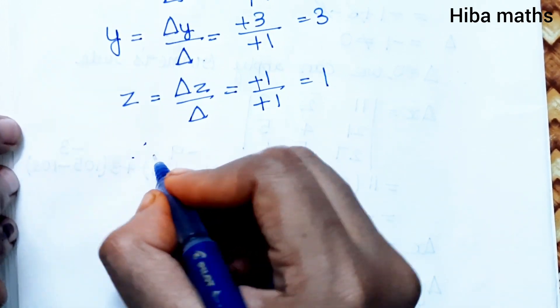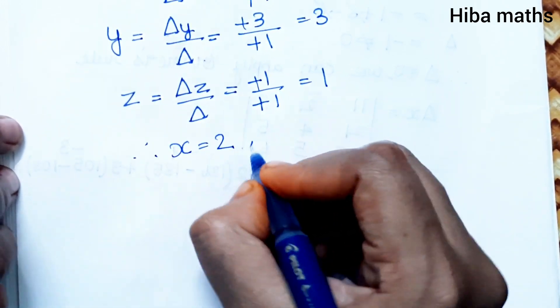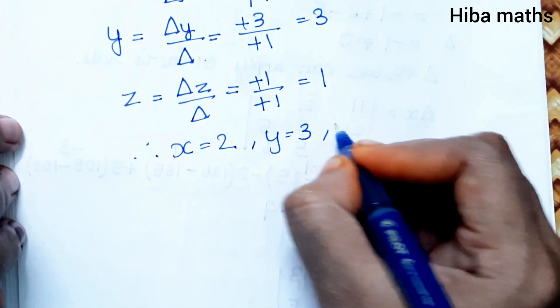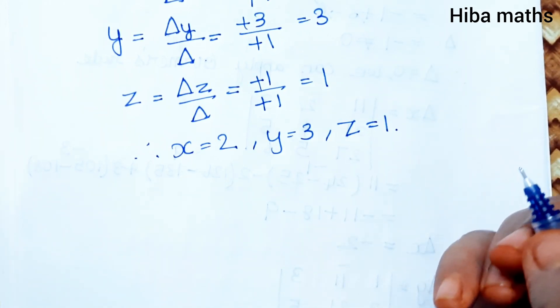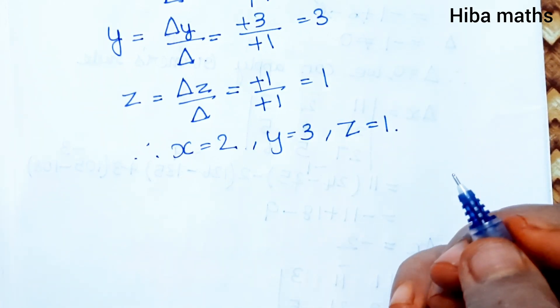Therefore, the solution is X = 2, Y = 3, and Z = 1. I hope you understand. If you have any doubt, please comment. Thank you so much for watching.